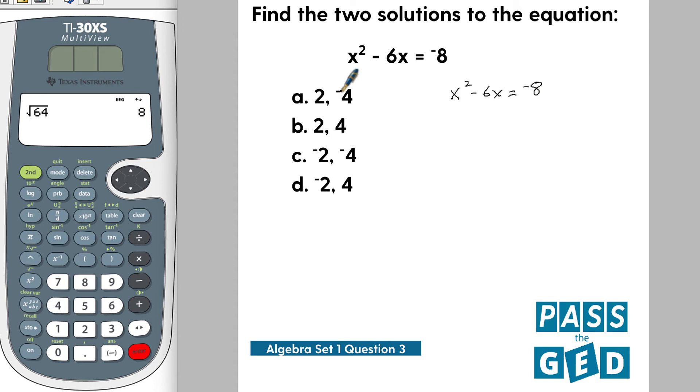If you get something that's looking wildly different from 2 and 4, you're probably not doing it correctly. The first step we want to do is set this equal to 0, so we're going to add 8 to both sides.